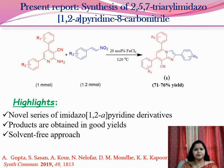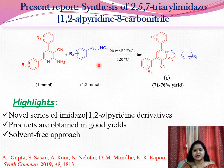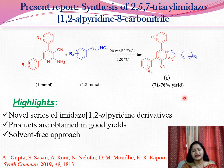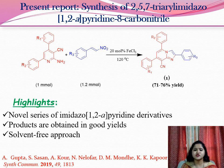This is the general scheme for the synthesis of this highly functionalized amitazopyridine moiety. Cyanaminopyridine reacted with 1.2 mmol of nitrostyrene in the presence of 20 mol% ferric chloride under solvent-free conditions at 120°C to give the desired product in good yields. The main highlights of this reaction are that it produces a novel series of amitazopyridine derivatives in good yield via a solvent-free approach.